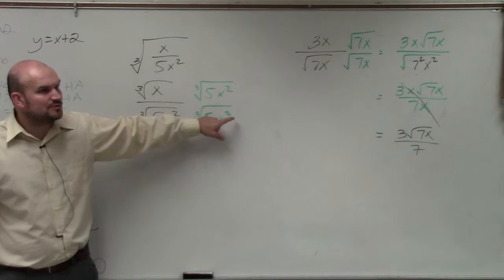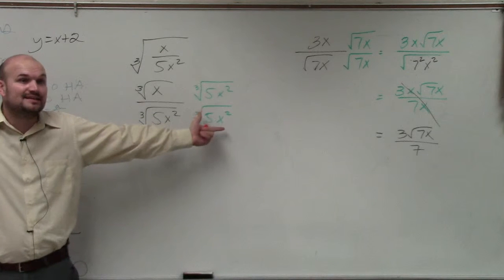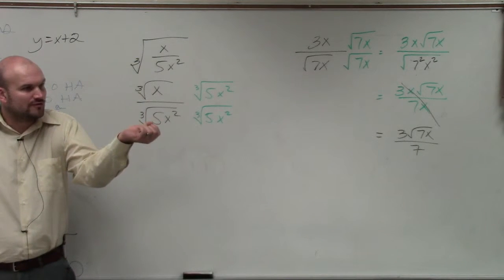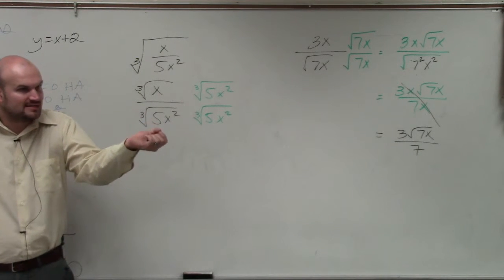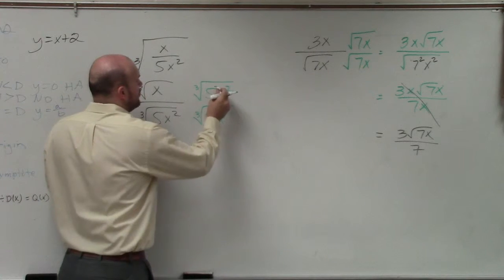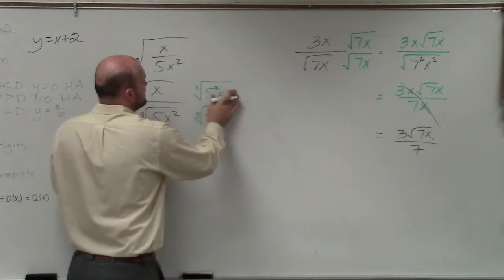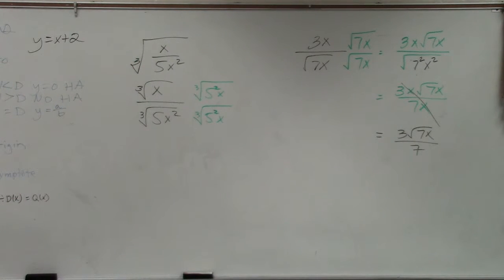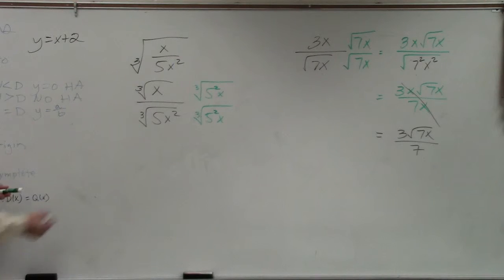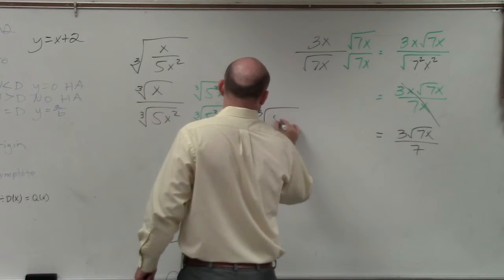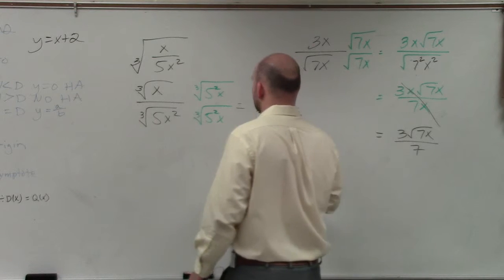You can only take the cube root of 5 cubed. Does x squared times x squared give me x to the fourth? I can take the cube root, but I'm still going to have an x left over. So what we want to do is multiply only by a fraction that's going to give us exactly what we need, because now my denominator is the cube root of 5 cubed x cubed.